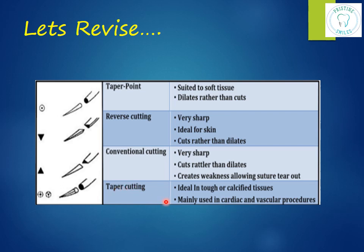In the cutting versions we have reverse cutting, conventional cutting, and taper cutting. Taper cutting is mainly used for cardiac or vascular surgeries. The difference: in a conventional cutting needle there are two opposing cutting edges and a third edge on the inside curvature, whereas in reverse cutting there are two opposing cutting edges and a third edge on the outer curvature of the needle.